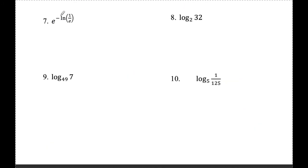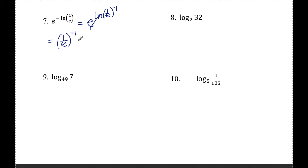Number seven: e to the negative ln of one over e. This negative is in the way — the only way the e and the ln can cancel is if they're actually touching. So I'll write this as e to the ln of one over e to the negative one, moving the negative as an exponent. Now the e and the ln cancel and I'm left with one over e to the negative one. To make this negative exponent positive, I flip the fraction, giving me e over one — so just e.